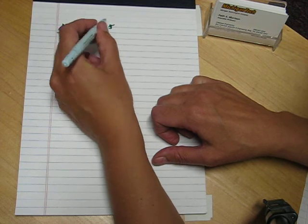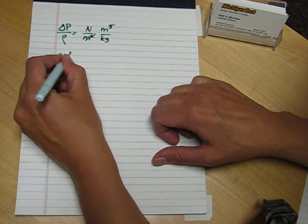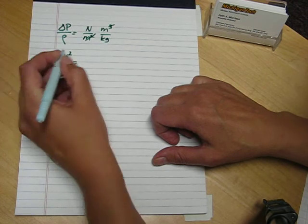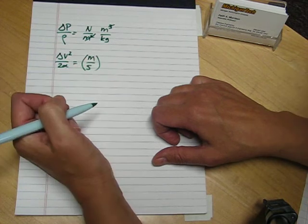And again, we have a force unit and a mass unit. The velocity term, velocity units would be meters per second, and when we square them, we get meters squared per second squared.